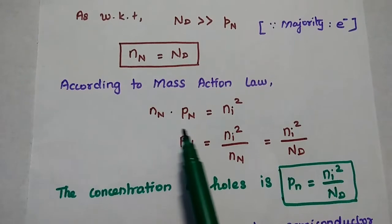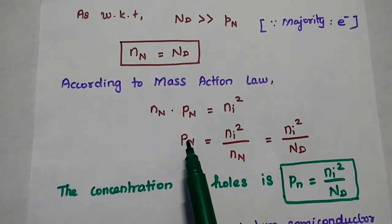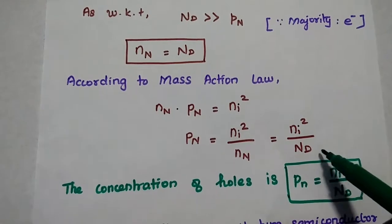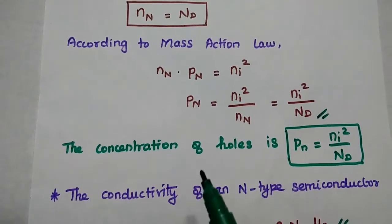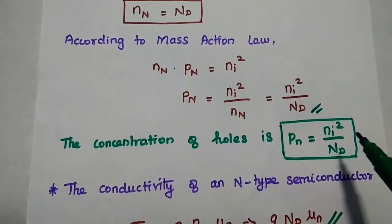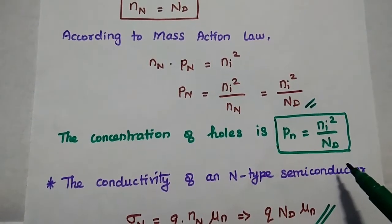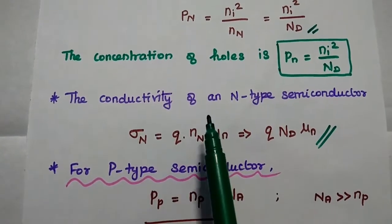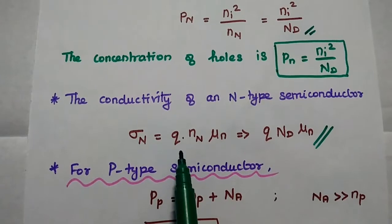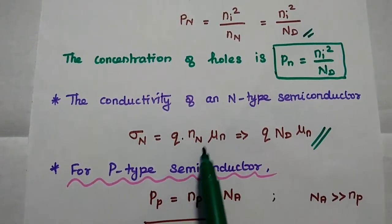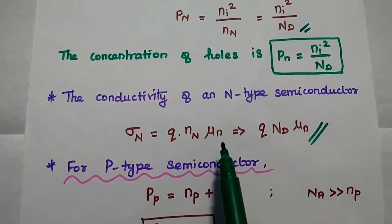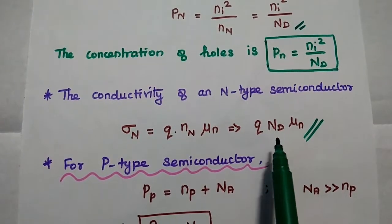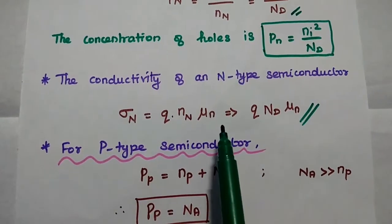From this we can get the concentration of holes in n-type semiconductor, which is equal to ni squared by n-n. This n-n can be replaced with n-d. So the concentration of holes in n-type semiconductor is equal to ni squared divided by the donor atom concentration. This is an important formula we can use in problem solving. The conductivity of an n-type semiconductor is equal to q into n-n into mu-n, where mu-n is the mobility of the electron. The free electron count can be replaced with the donor atom count.